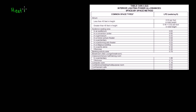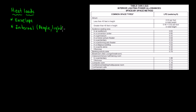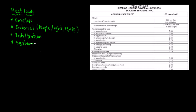Just to remember, the main heat loads are: number one, the envelope; number two, internal loads — which include people load, lights (that's what we're talking about now), and equipment; and then infiltration and system.